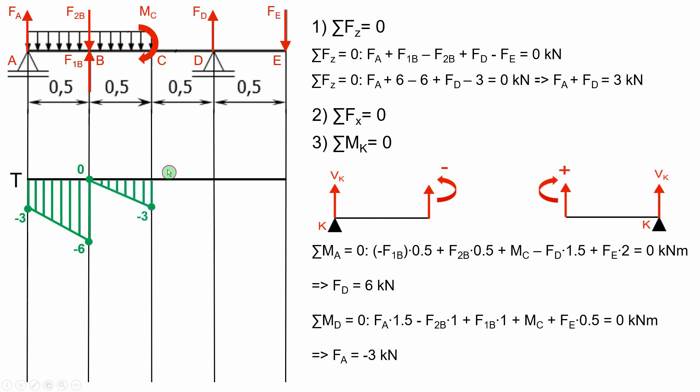On CD section there is no force applied. So we keep going linearly from minus 3 in point C to minus 3 in point D. We reached point D where there is the reaction from the roller support FD. So from minus 3 we go to 3 because we know that the value of FD is 6 kN. And now the diagram is closed. On DE section there is no force applied so we keep going linearly reaching point E.